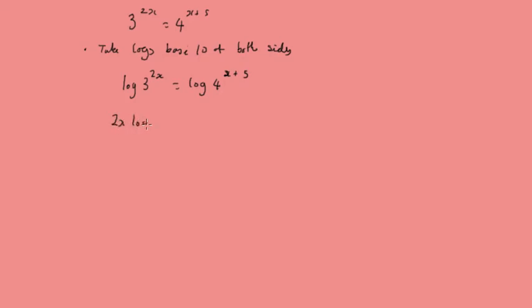So we'll have 2x log 3 and that's going to be equal to x plus 5 log 4. And again, we're going to expand this bracket out. So we'll have x log 4 plus 5 log 4. Now we're going to take this over here because we've got 2 parts of it that have x in it. So we'll have 2x log 3 minus x log 4 and that's going to equal 5 log 4.